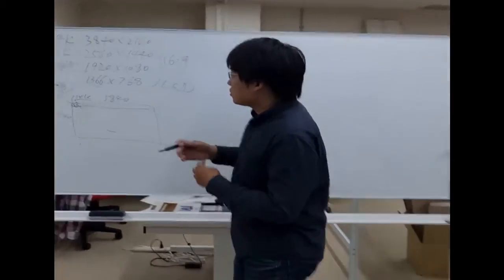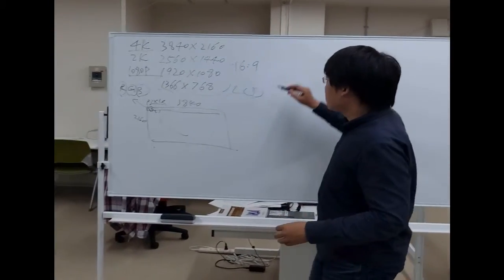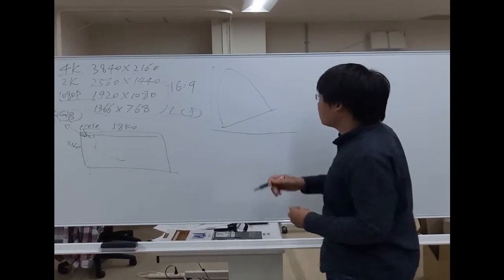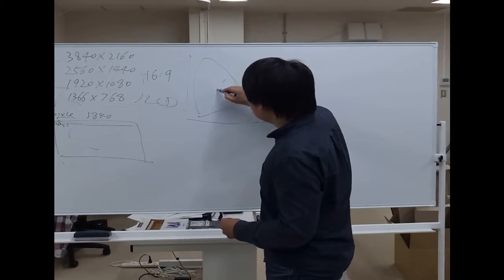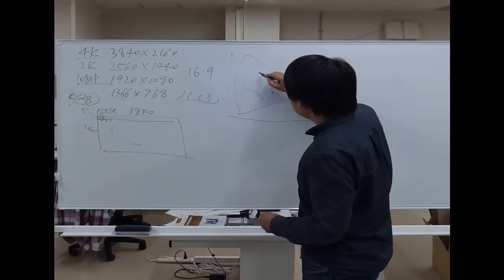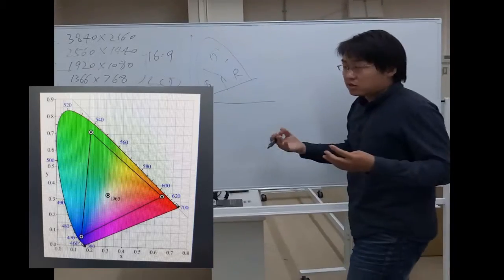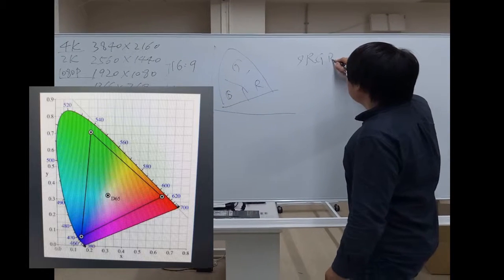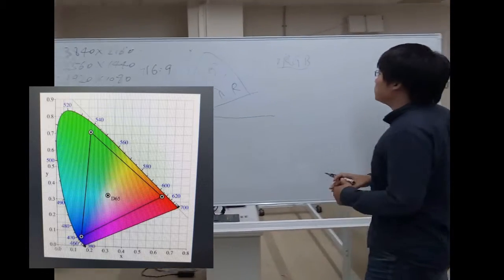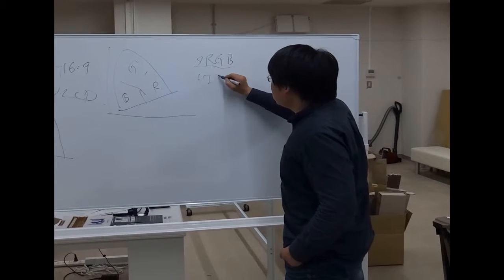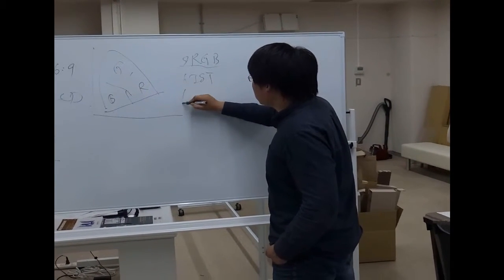This color also has a whole system. Maybe someone has seen these pictures. This is R, this is B, this is G. And we have some standards: sRGB, which is created by Microsoft and HP; NTSC; and Adobe RGB.